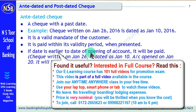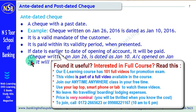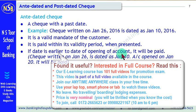An anti-dated check is a valid mandate of the customer and it shall be paid whenever it is presented. But the payment shall be made within the validity period, and validity will be calculated from the date on the check, not from the date of presentation. Even if the date is earlier than the date of opening the account, the check will still be paid. For example, a check written on January 26th dated January 10th, where the account was opened on January 20th — this check will be paid. So an anti-dated check, even when the date is earlier than the date of opening the account, shall be paid.